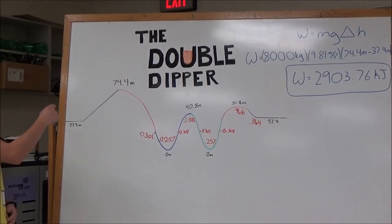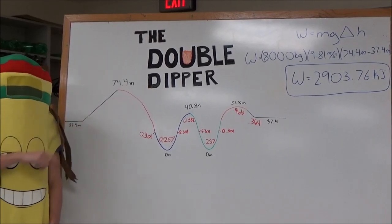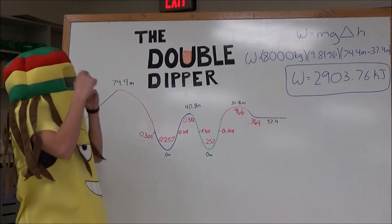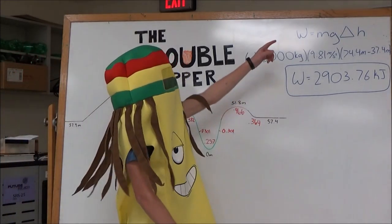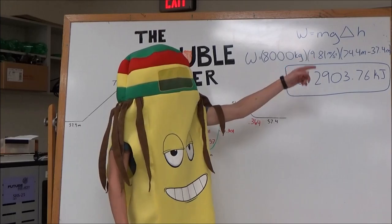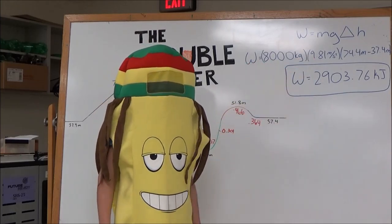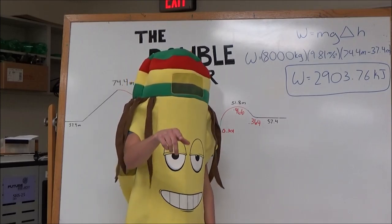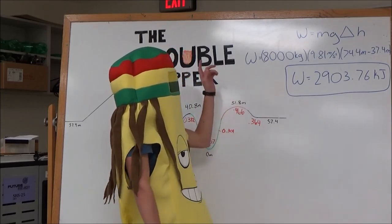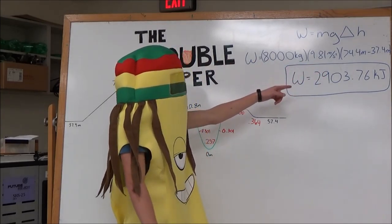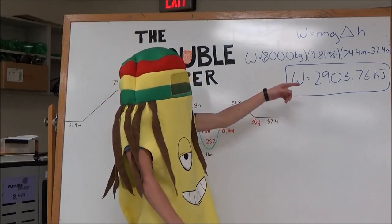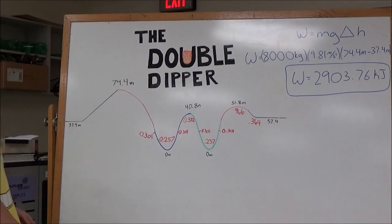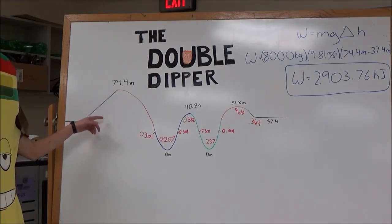Here, we're going to talk about the amount of work it takes to pull the car up full of a bunch of people. Now, the equation is W equals mg delta H. And if we know that the car weighs 800 kilograms, including all the people in it, then we can plug in the rest and we get 2,903.76 kilojoules. And that's how much energy it takes to pull it up here.